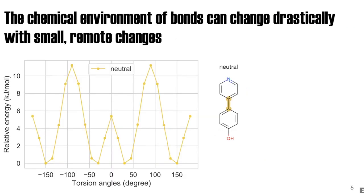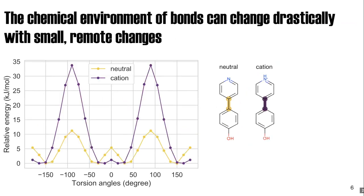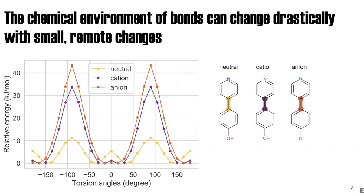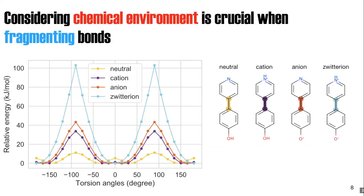Let's look at an example with biphenyl and its central bond. What I'm showing on the left is the torsion scan of the central bond—it can rotate freely. Now if you protonate the nitrogen on this molecule, the barrier heights increase. If you deprotonate the oxygen, it increases some more. And when this molecule is in the zwitterion form, you end up with a scan that looks more like a double bond than a single bond.